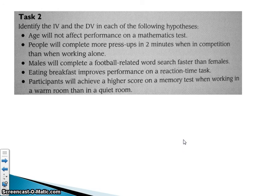Looking at IV and DV in these following hypotheses: 'Age will not affect performance on a mathematics test.' The IV would be the age of the participant, and the DV would be their performance on the test. It's literally saying: if we make a change to something, what are the results? IV and then DV.